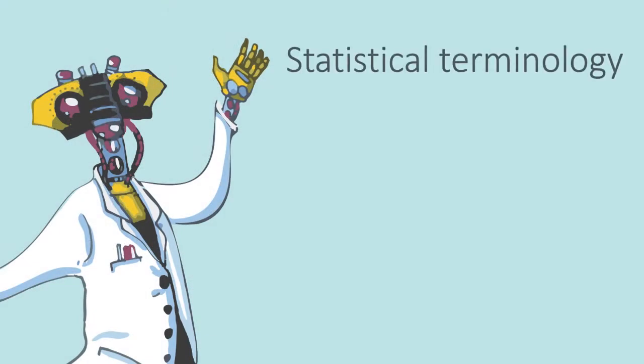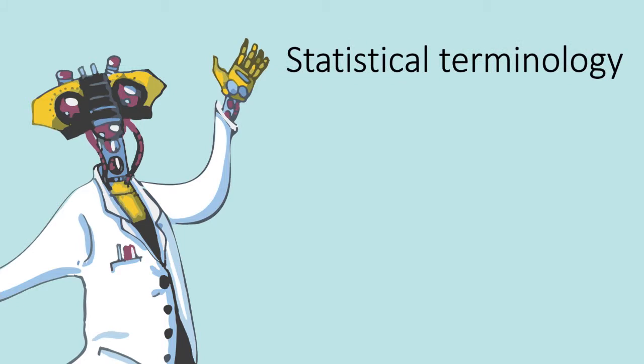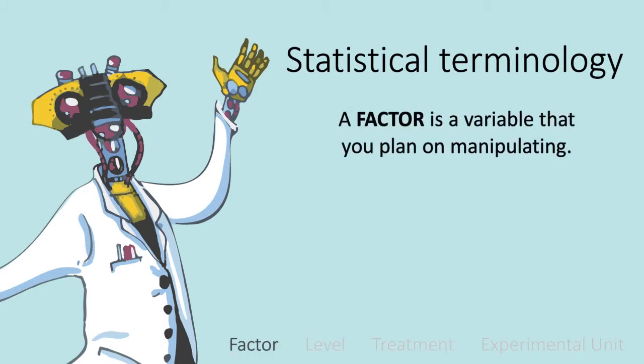First let's talk statistical terminology. A factor is a variable that you plan on manipulating. In experiments examining changing ocean systems we often refer to factors as drivers. So in John's three factor experiment he manipulated pCO2, salinity and temperature.